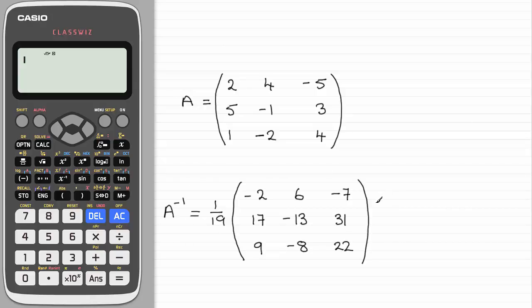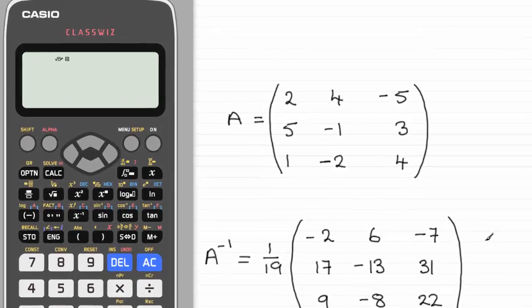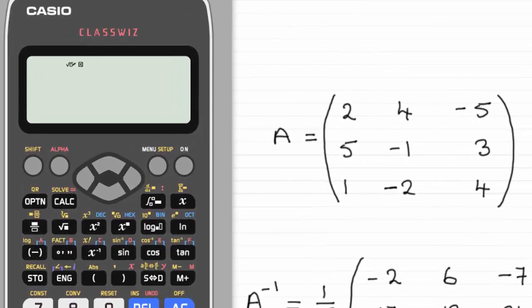What I want to show you in this video is a quicker way, if your examining board allows you to use a calculator. What I've got here is a Casio ClassWiz calculator, although you might find you've got a similar function on any other scientific calculator.